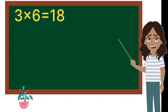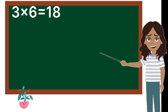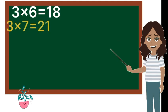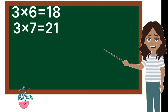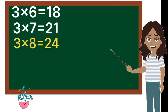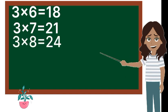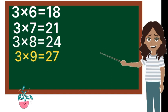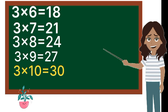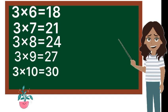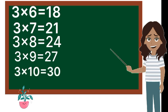3 6s are 18, 3 7s are 21, 3 8s are 24, 3 9s are 27, 3 10s are 30.